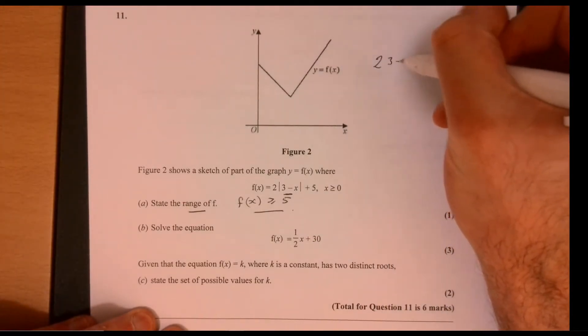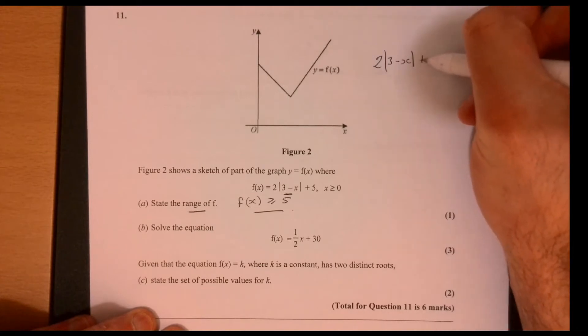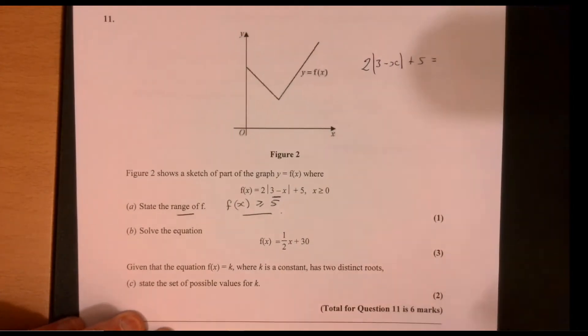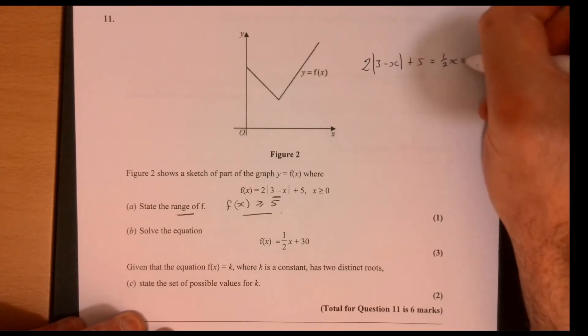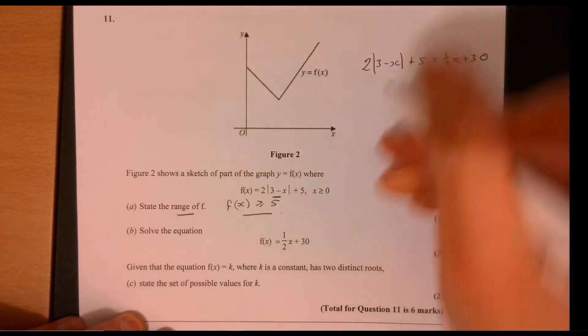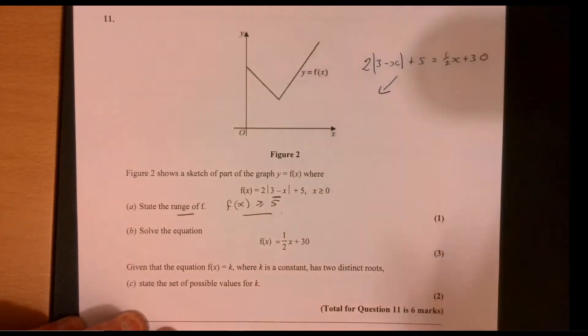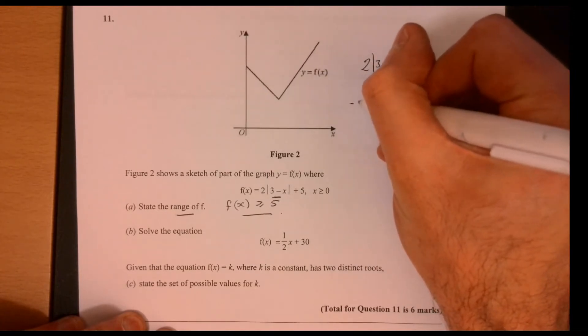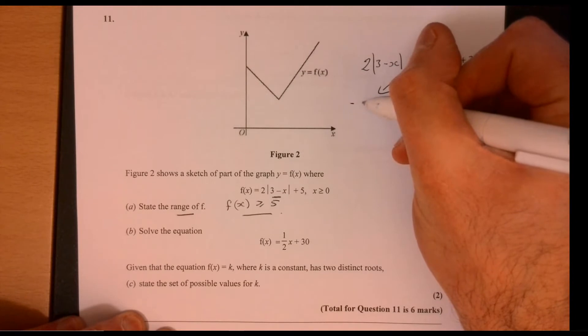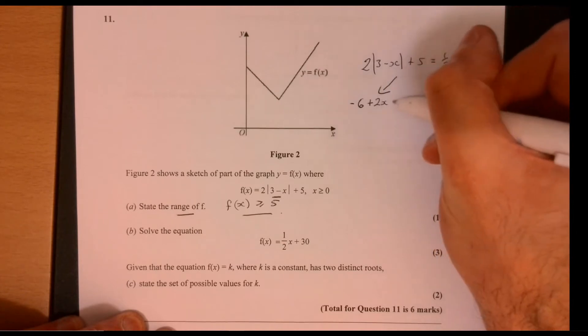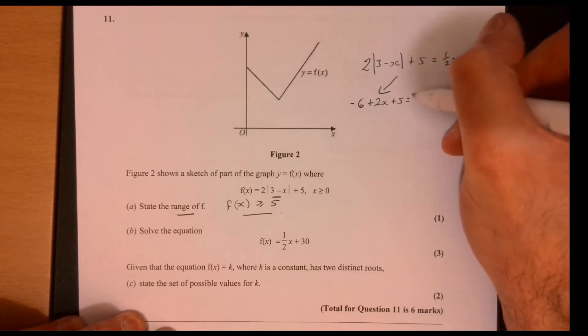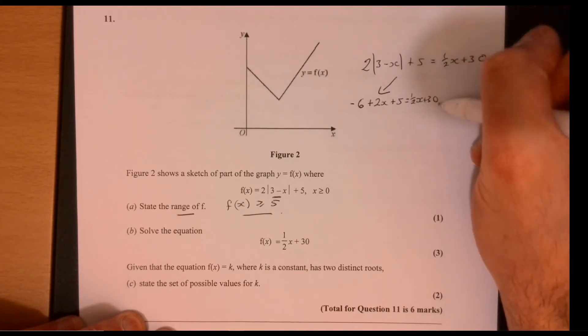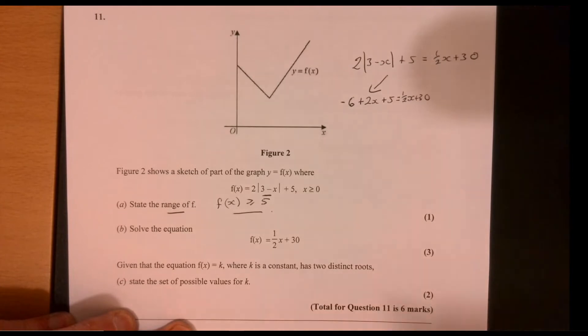So we've got 2 times 3 minus x plus 5, and we're saying that's got to be equal to half x plus 30. So let's consider option 1. So that's when this is ending up being a minus. Let's imagine that's minus in front there. So if we multiply that out, that's going to give us minus 6 plus 2x plus 5 equal to half x plus 30. So let's go on and solve that option first of all.